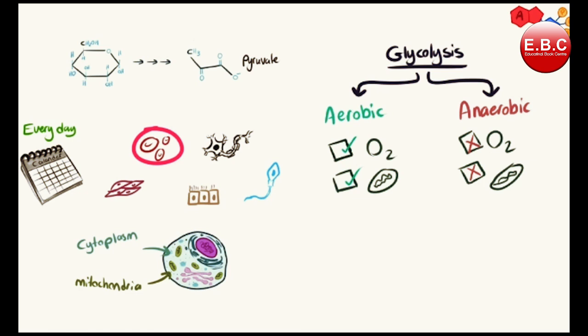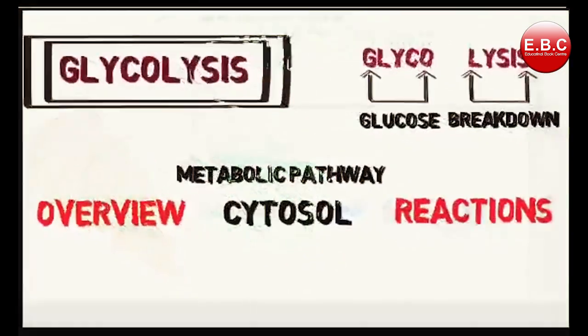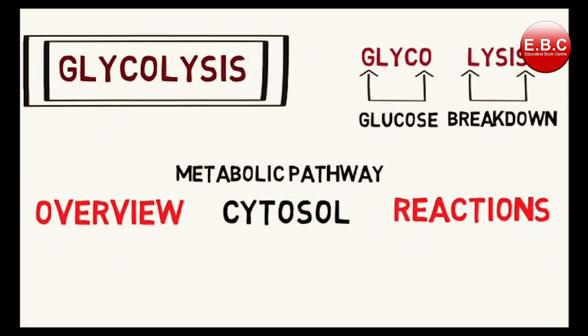Glycolysis can be aerobic or anaerobic. Aerobic means it requires oxygen, and anaerobic means without oxygen — and it also lacks mitochondria. For example, suppose you are a pizza lover like me. If we eat pizza, what do we get? Glucose. Anything having carbs, protein, or fat — what we are all getting is glucose.